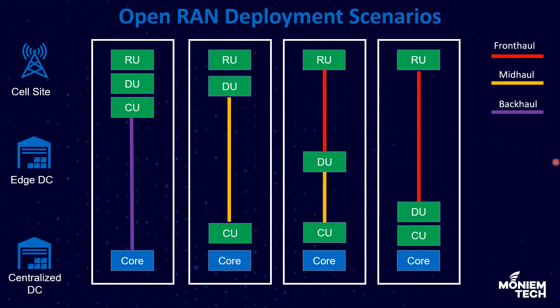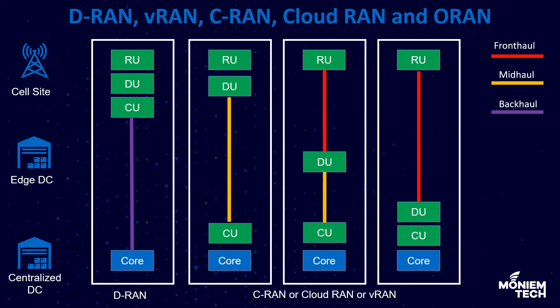There is no one-size-fits-all scenario. We need to keep in mind constraints such as the role of the RU, whether it is massive MIMO, the spectrum (sub-6 GHz), and whether it is 4G or 5G. Many factors will impact which scenario applies. There are also many keywords we hear in O-RAN and V-RAN, such as D-RAN, V-RAN, C-RAN, centralized RAN, cloud RAN, and O-RAN.